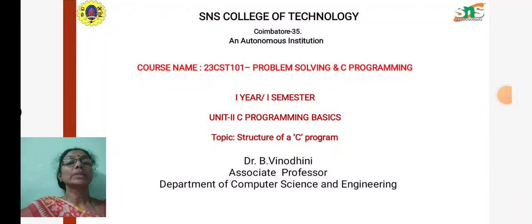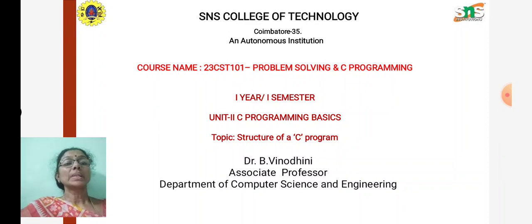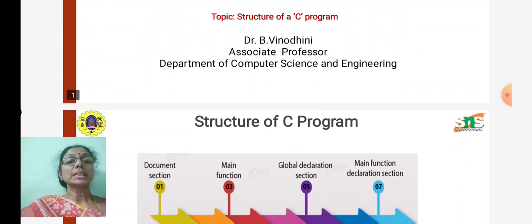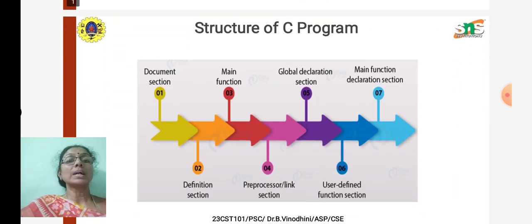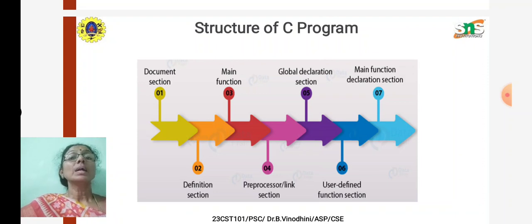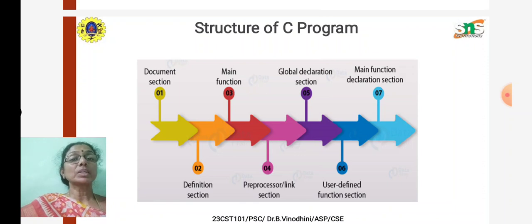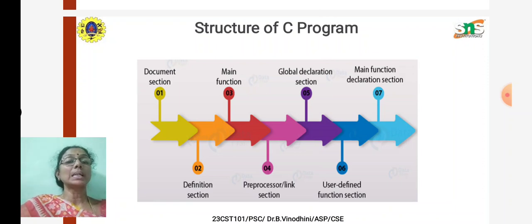In this lecture series, today's class we are going to study about what is the structure of a C program with an example. Every programming language has a specific structure, and the C program also has its own structure. The structure contains: first, a documentation section; next, a header file or preprocessor directive section; followed by a definition section and global declaration section; then the main function, which inside contains the declaration part and executable part.